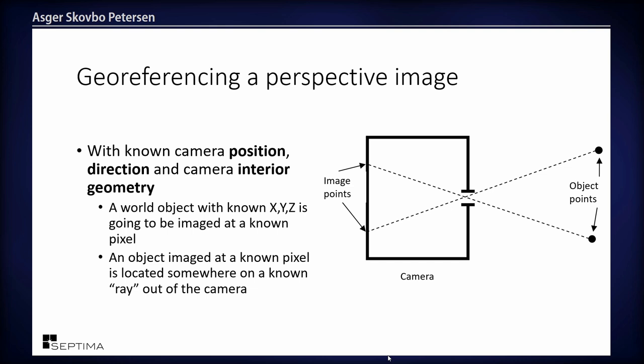A small note about georeferencing a perspective image: it's not georeferenced like an orthophoto, where you have the top-left coordinate and the resolution and you're basically done. This needs a slightly more complicated transformation to go from pixel coordinates to world coordinates and back. A good mental model is the old shoebox camera — basically a box with a hole and an imaging plane; in the old days this was photographic paper.